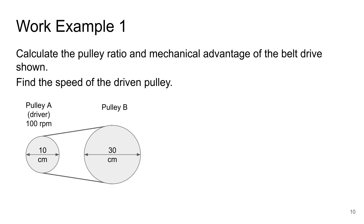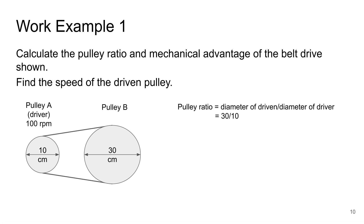Let's practice through a worked example. We want to calculate the pulley ratio and mechanical advantage of the belt drive shown, and find the speed of the driven pulley. Pulley A is the driver rotating at 100 rpm, with a diameter of 10 centimeters. Pulley B is the driven pulley with a diameter of 30 centimeters. Pulley ratio equals the diameter of the driven divided by the diameter of the driver, which is 30 divided by 10, equal to 3.